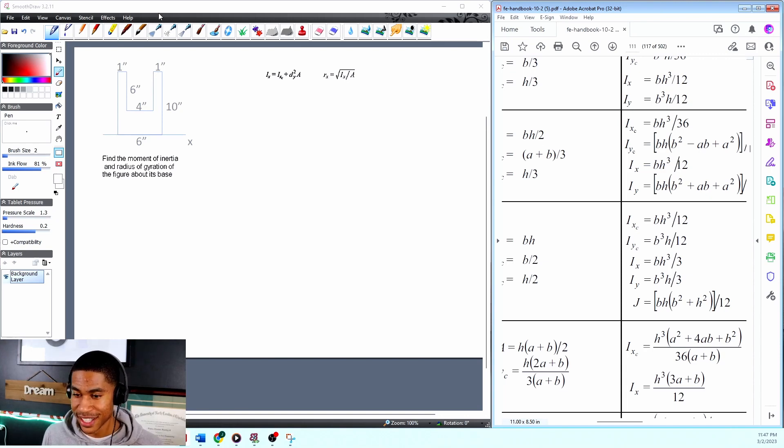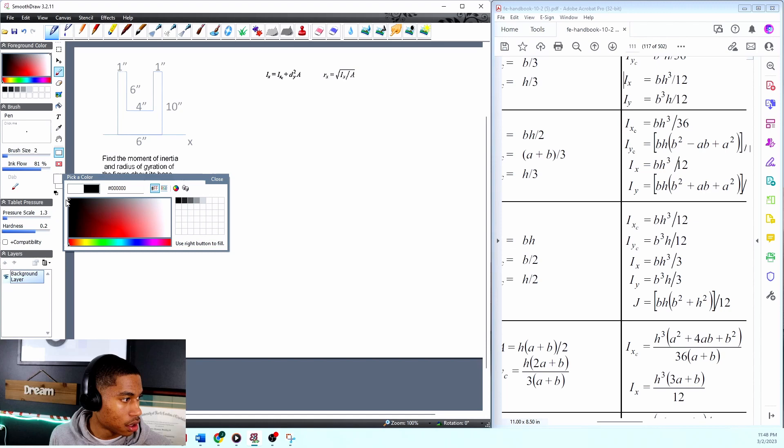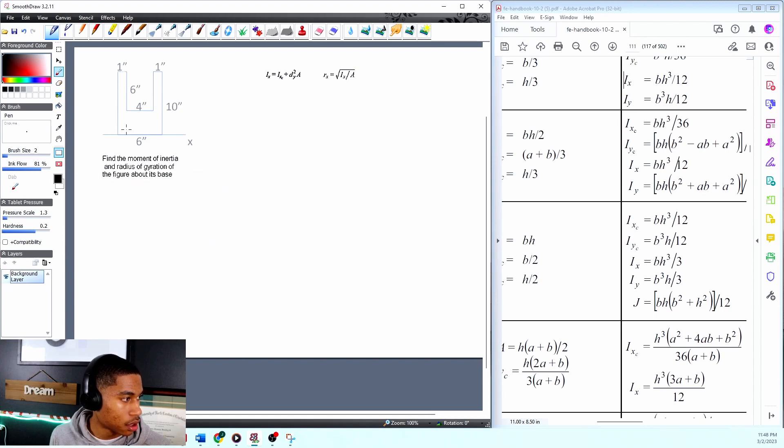Let me show you what I mean by this. I need my pen, I want it black. Basically for my first rectangle, my box, it's gonna be the big rectangle.